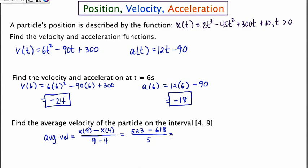Going to the calculating screen: 523 minus 618 gives negative 95. Negative 95 over 5 is negative 19. So the average velocity over this interval of time is negative 19.